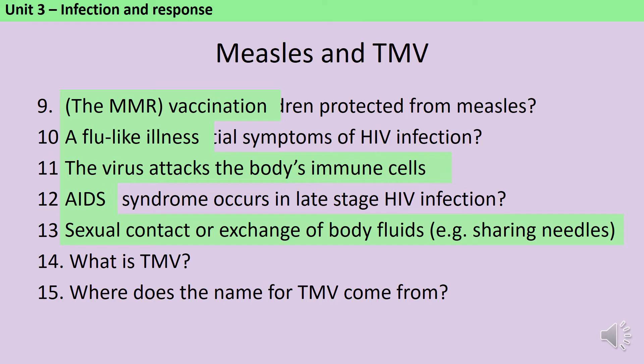TMV is tobacco mosaic virus. It's called this because of the distinctive mosaic pattern that appears on the leaves of the tobacco plant when it's infected by TMV.